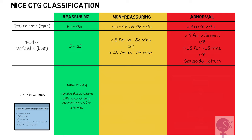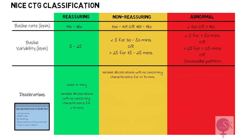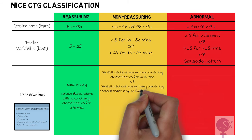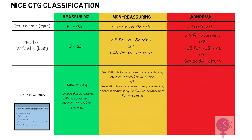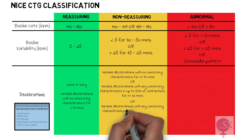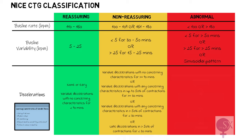The non-reassuring features include: variable decelerations with no concerning characteristics for more than or equal to 90 minutes; variable decelerations with any concerning characteristics in up to 50% of contractions for more than or equal to 30 minutes; variable decelerations with any concerning characteristics in more than 50% of contractions for less than 30 minutes; or late decelerations in more than 50% of contractions for less than 30 minutes.